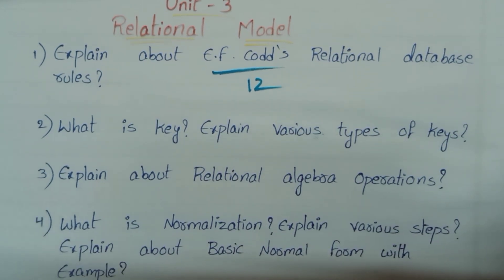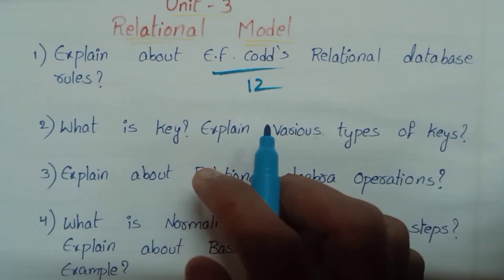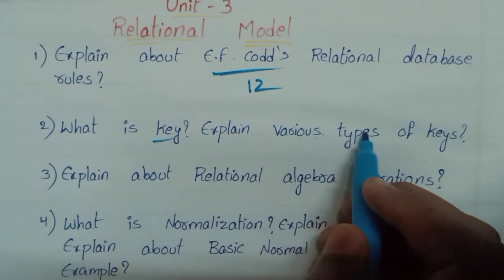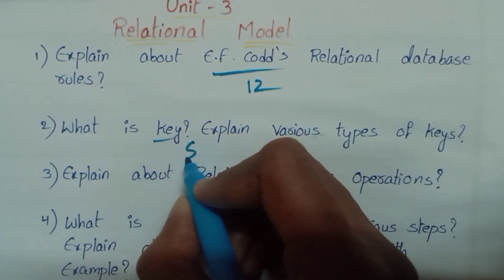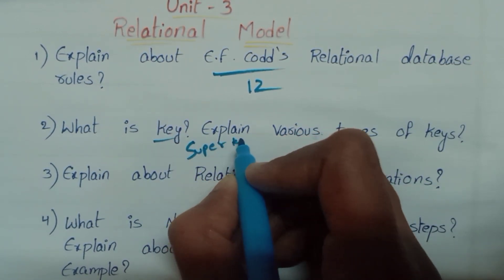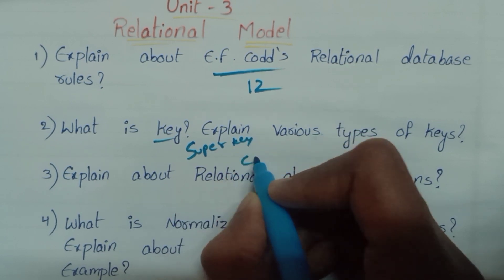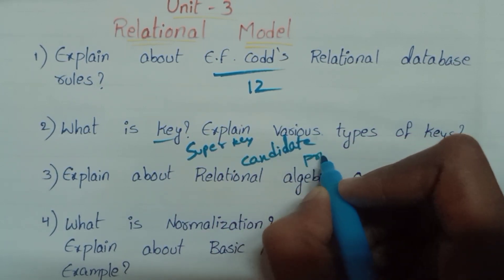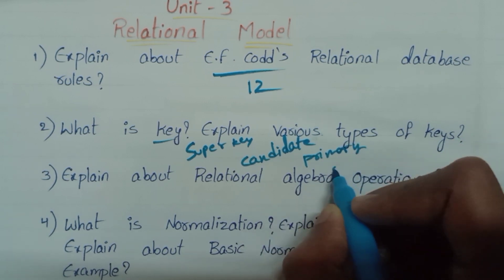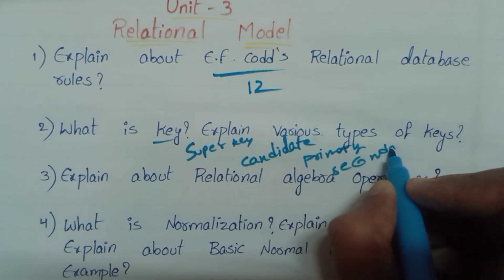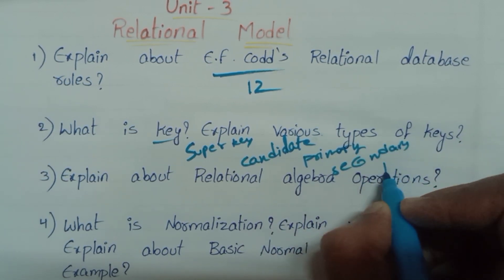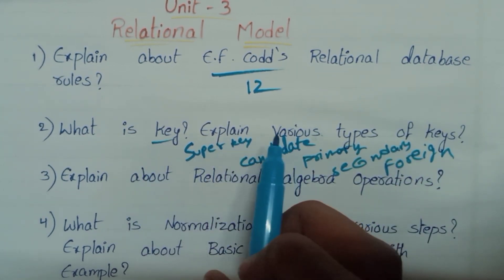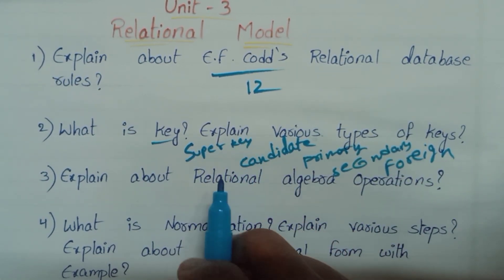What are Keys? Explain the various types of keys. Keys include: Super Key, Candidate Key, Primary Key, Secondary Key, and Foreign Key. Describe each of these key types.